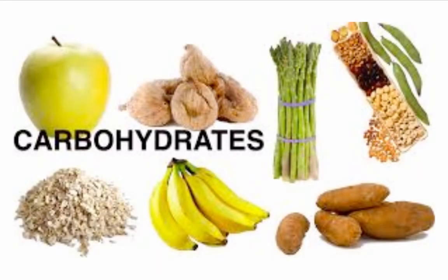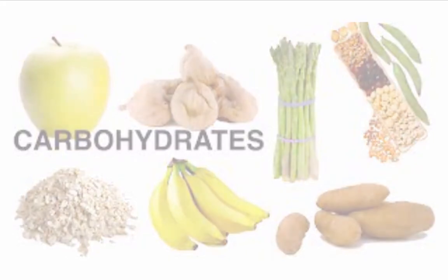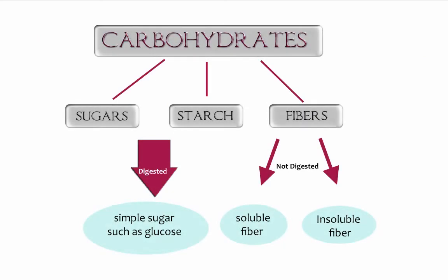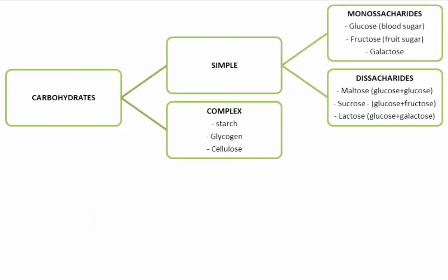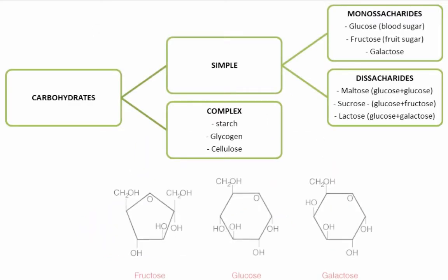Carbohydrates are the sugars, starches, and fibers found in fruits, grains, vegetables, and milk products. They are one of three main ways that the body obtains energy or calories, and are essential for proper body functioning — the body requires a large amount of them. Carbohydrates are classified as simple or complex. The difference between the two forms is the chemical structure and how quickly the sugar is absorbed and digested.